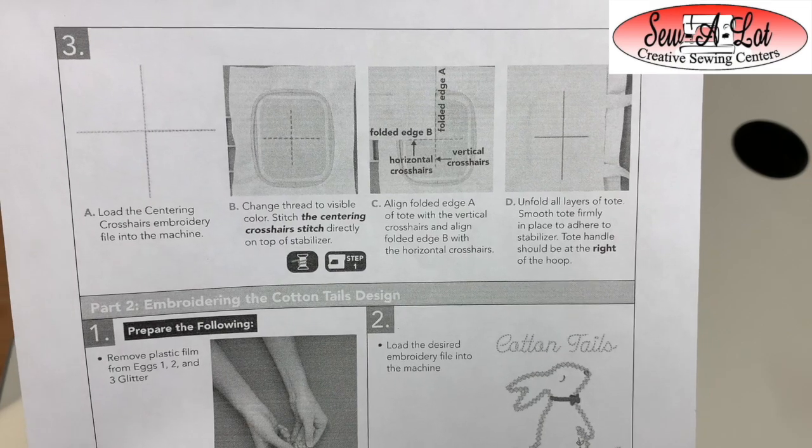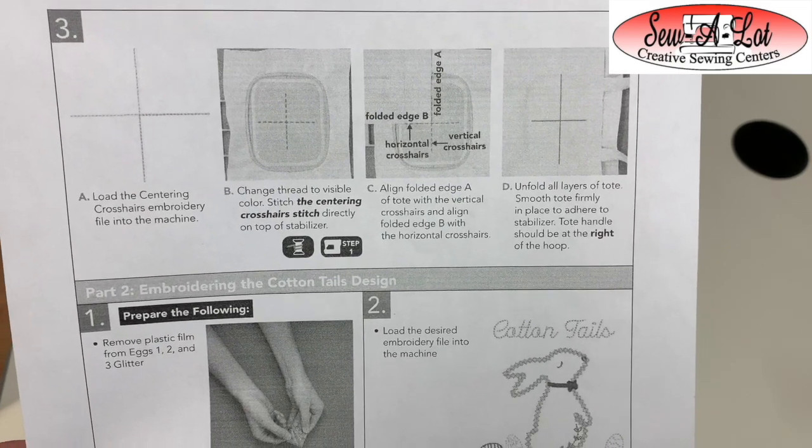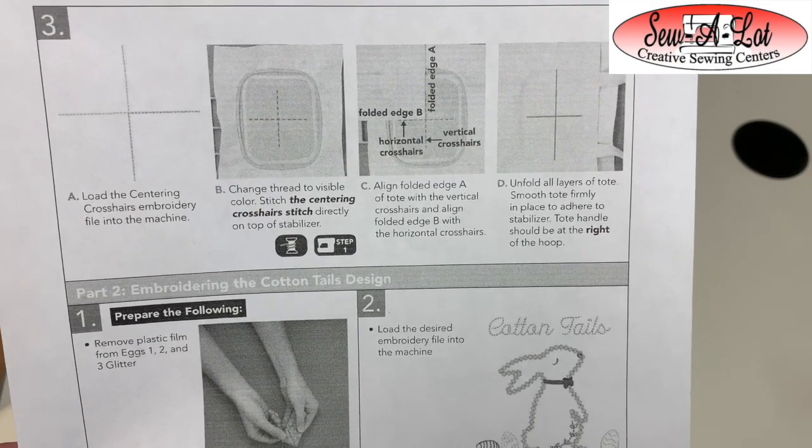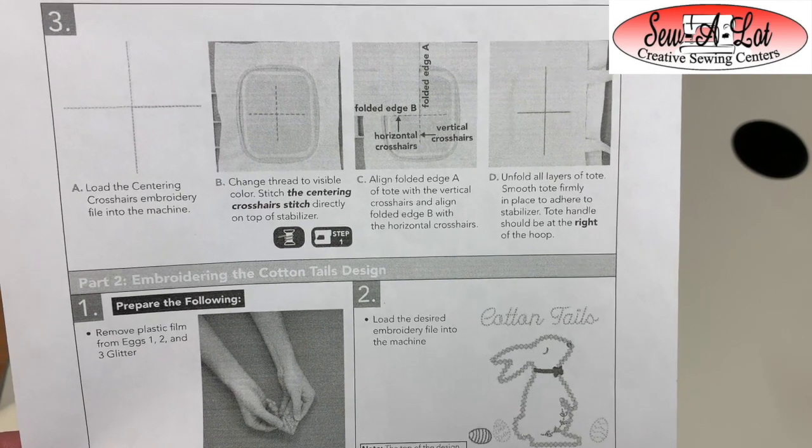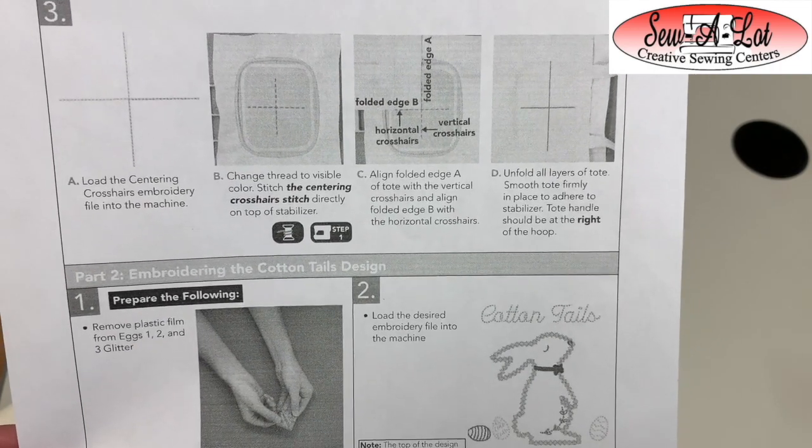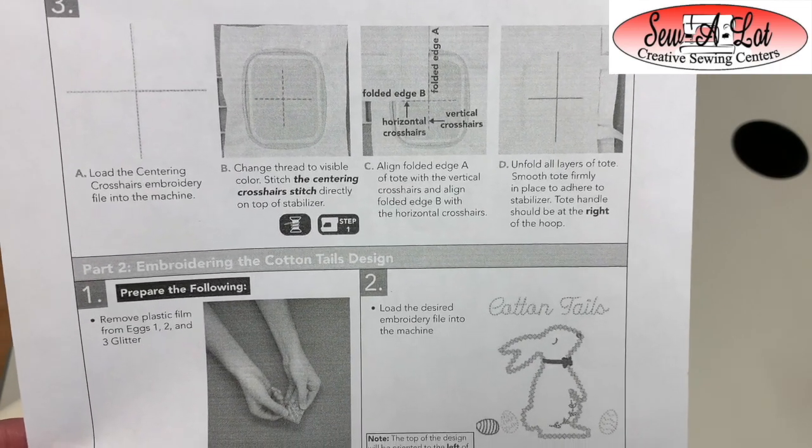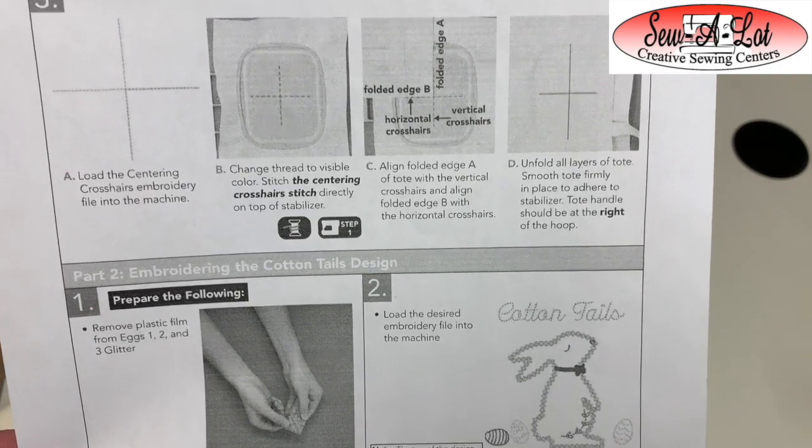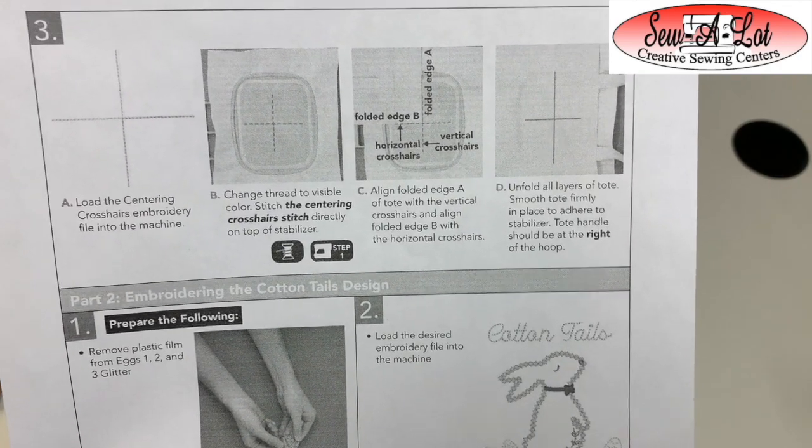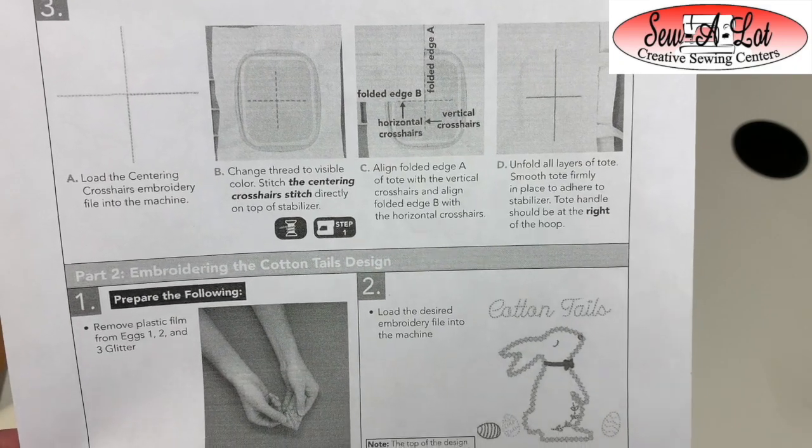From here I want you to make sure you take a look at the steps, because when we go to actually hoop the tote bag you're going to think something's wrong just because of the way the bunny is positioned. I want you to pay close attention to hooping to make sure that everything gets right side up or upside down like it's supposed to be.